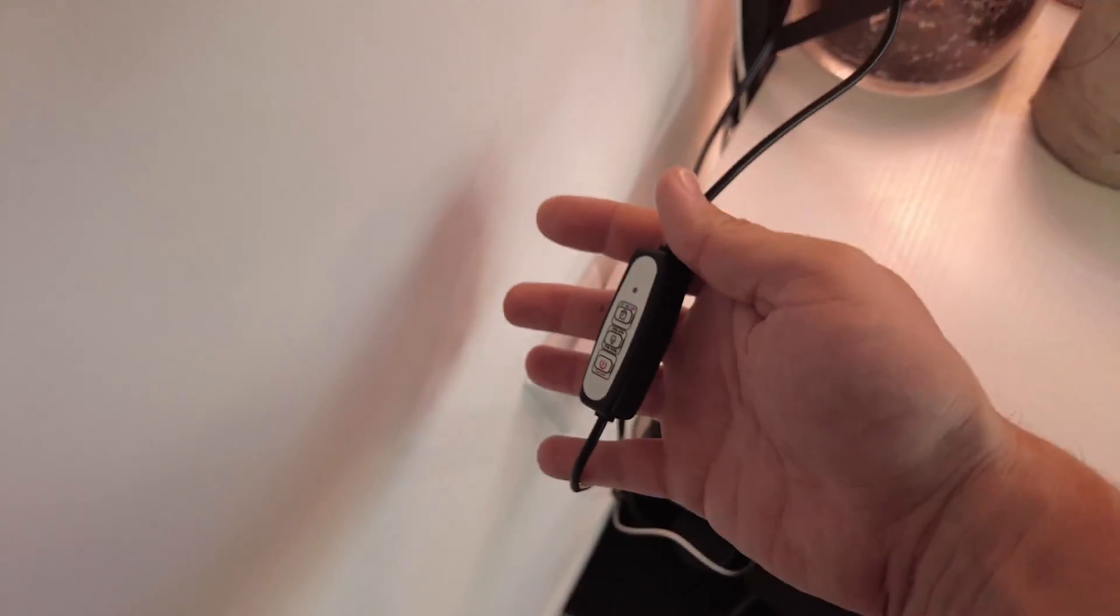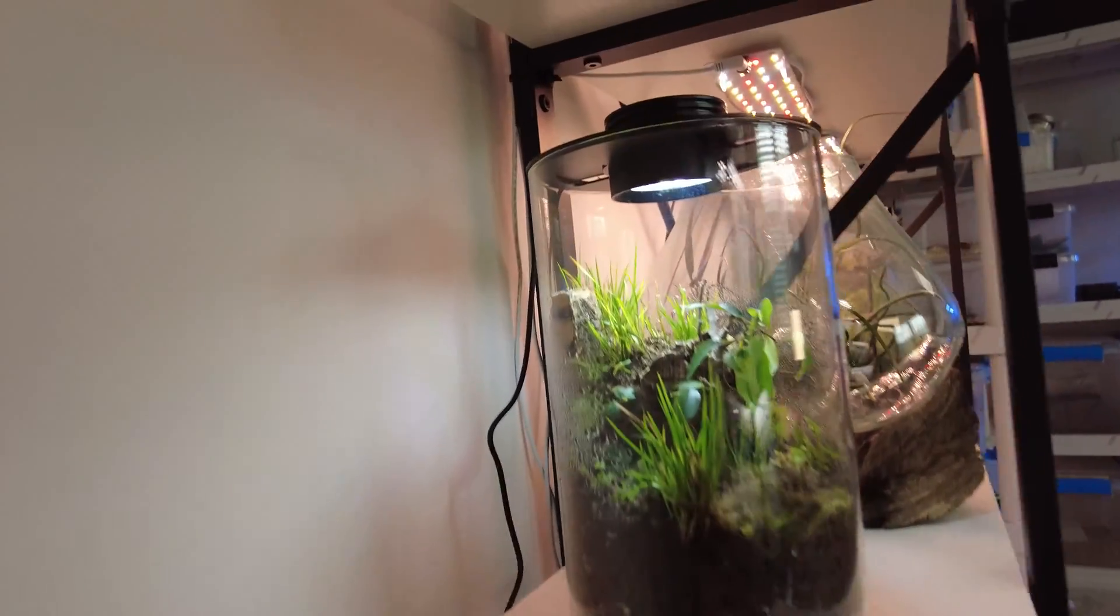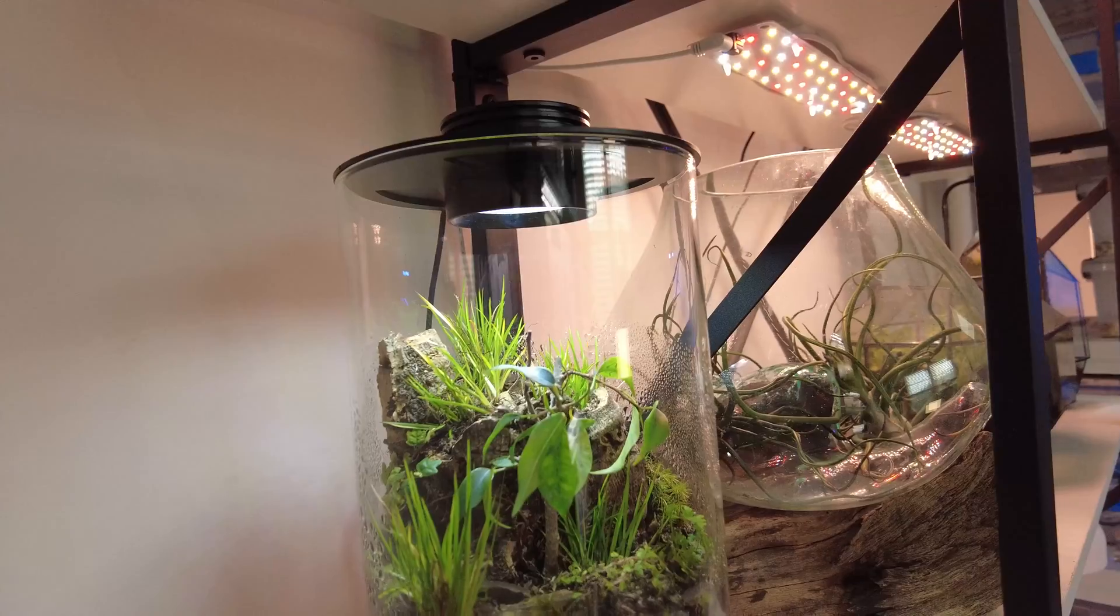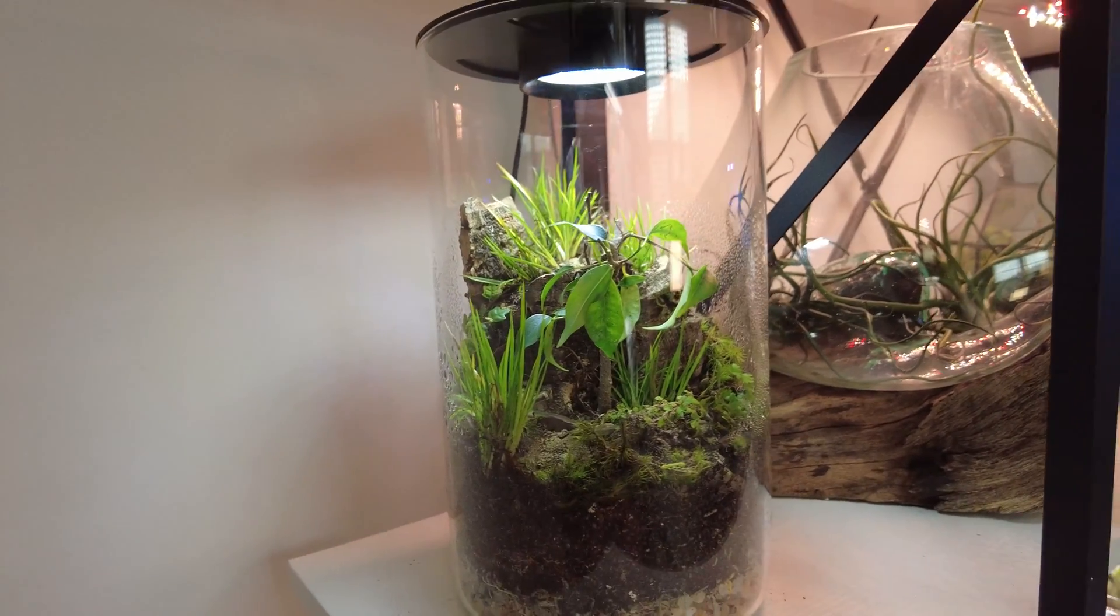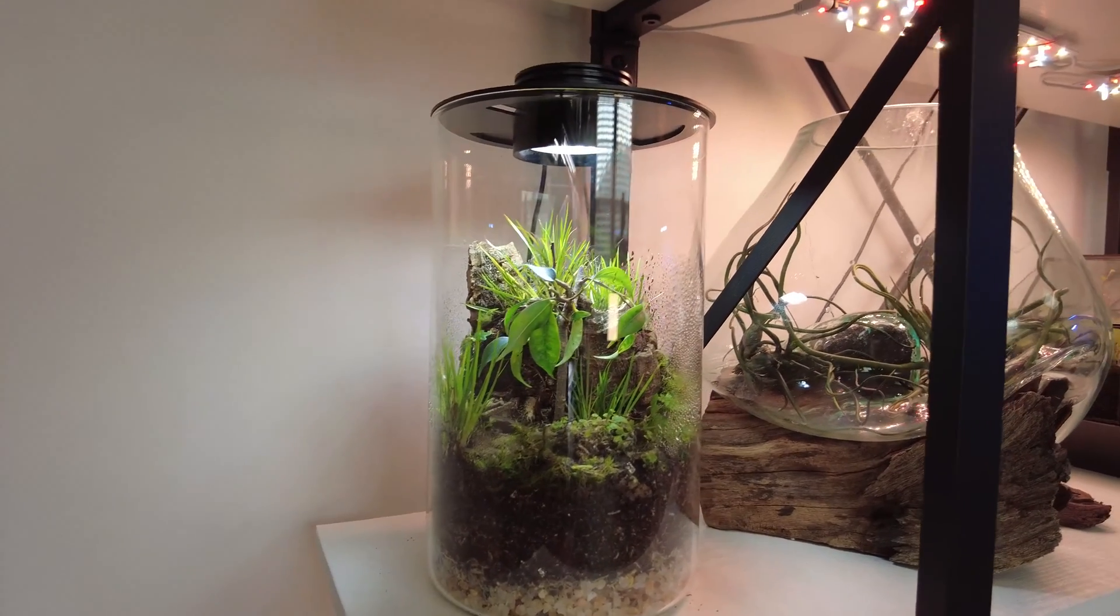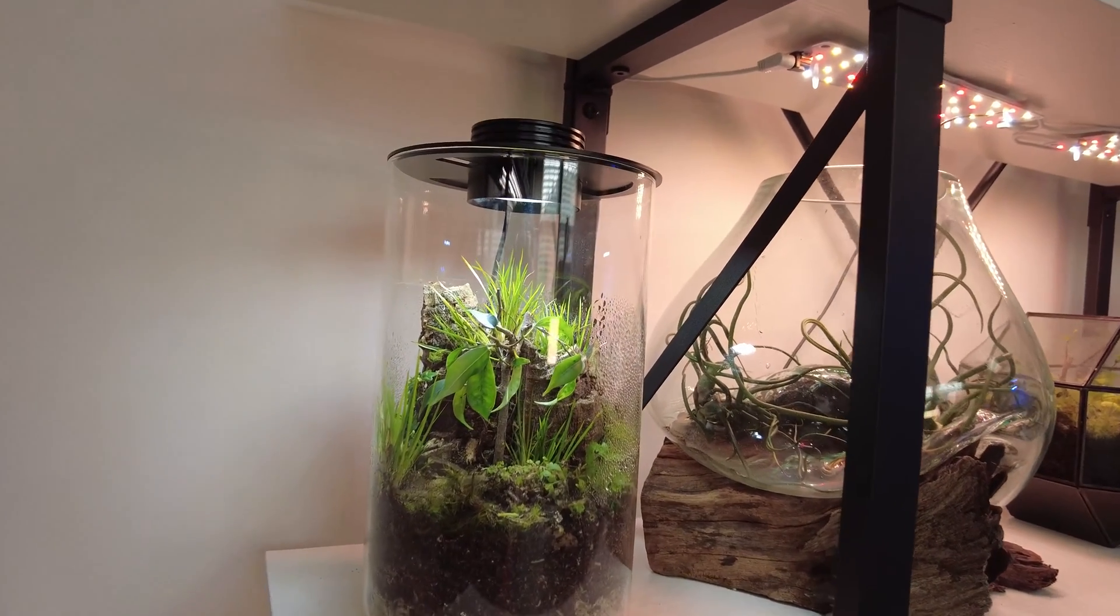That comes on what seems like every grow light or terrarium or anything like that that you buy on Amazon and places like that. It's those built-in timers. Hold on, let me get a shot of it while I talk about it. It's these things right here, these built-in timers.